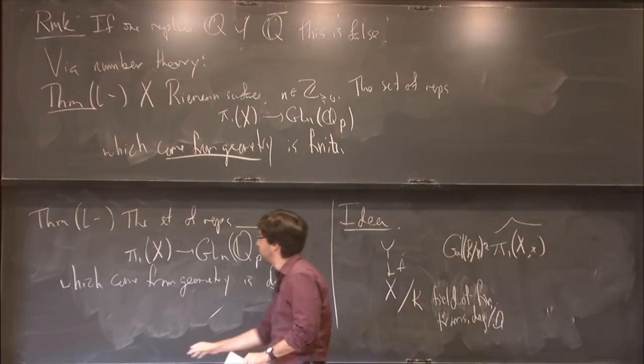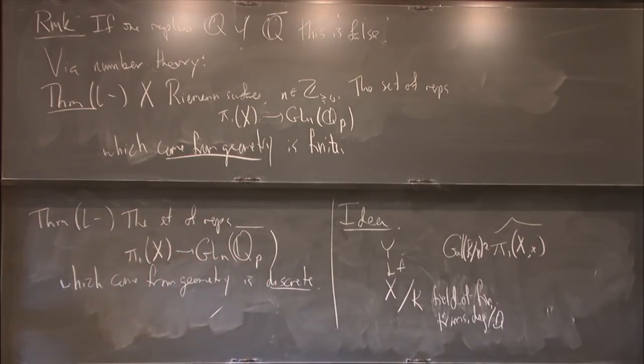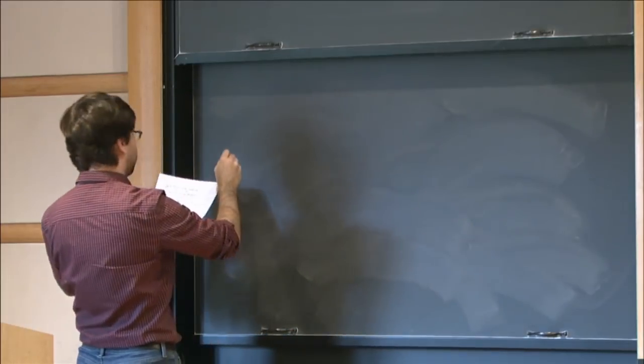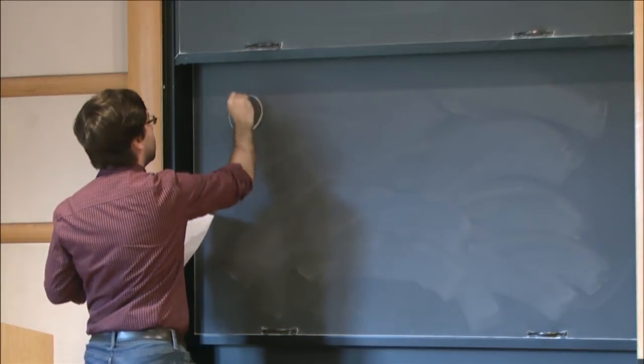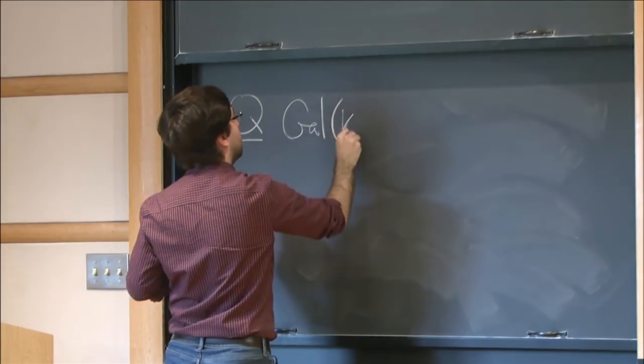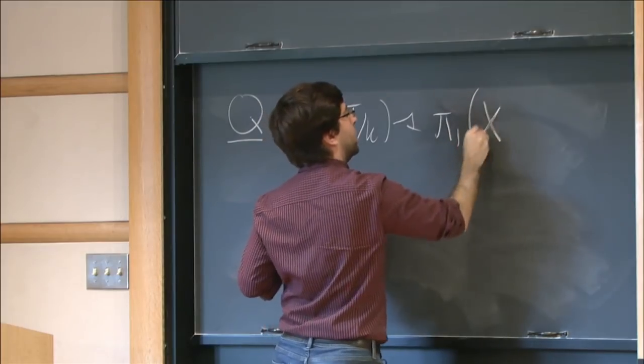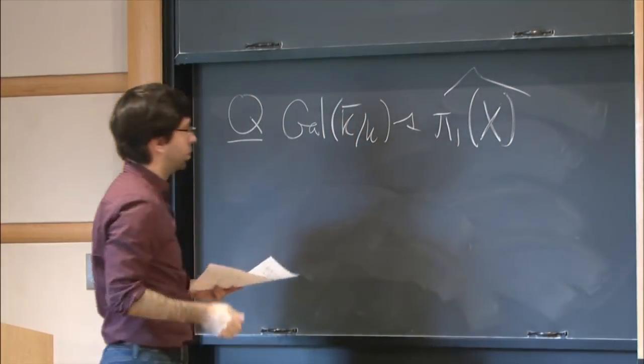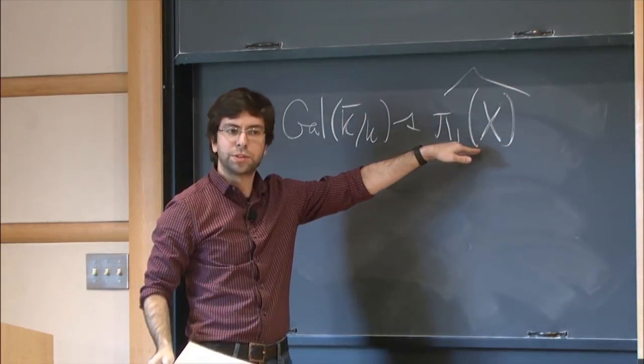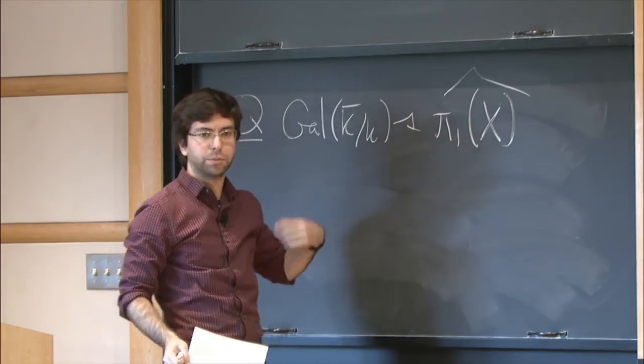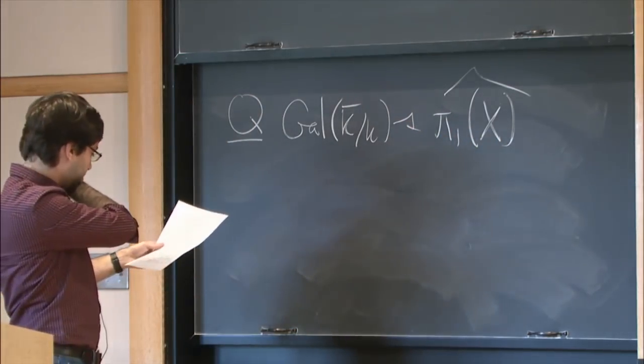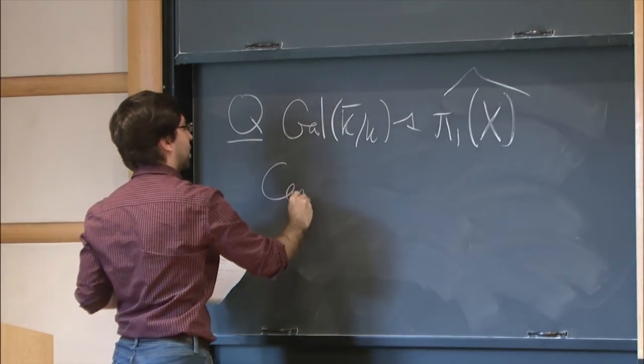So just to finish up, let me tell you what I want to think about for this year, and I'll state it slightly vaguely, but there's so many interesting questions that can come out of it, it's hard to do them justice. So we have this action of the Galois group of an interesting field on the fundamental group of an algebraic variety. So if you'd like, if x is a Riemann surface, an affine Riemann surface, this is just a pro-finite free group. It's a fairly standard, simple object. And the question is, can we describe this action?